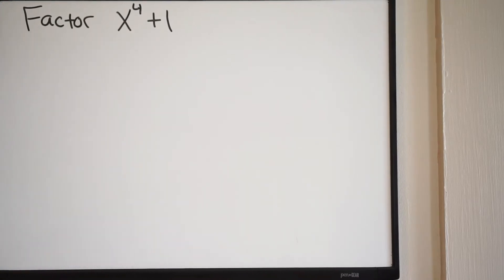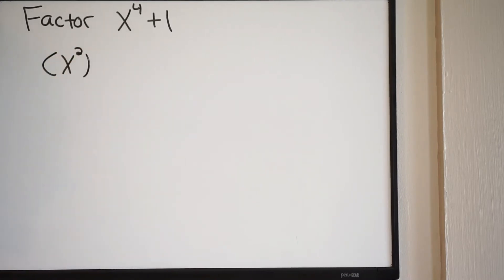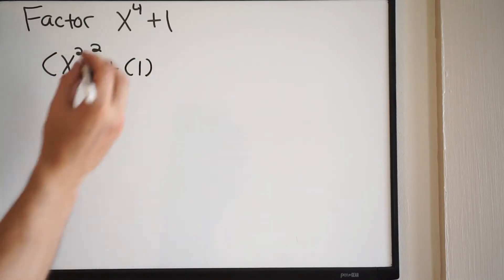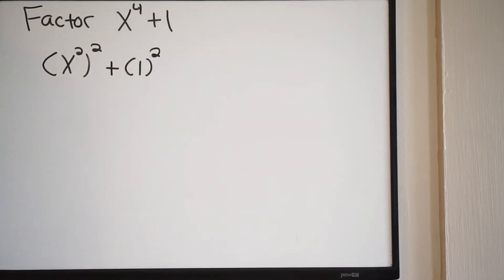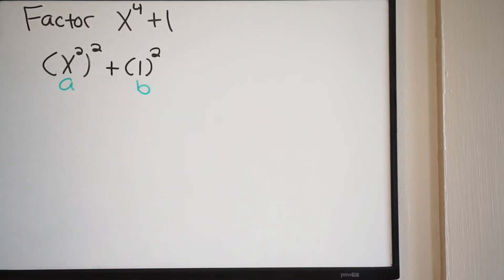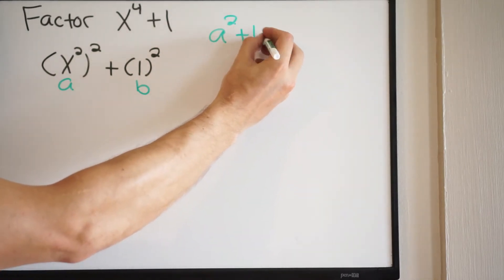The first step is to rewrite what we have. I have x to the fourth plus one, and I'm going to rewrite it as x squared in parentheses to the second power, plus one in parentheses to the second power. Mathematically that's the same thing — we just rewrote it. I'm going to assign my terms some variables: I'll call x squared 'a' and one 'b'. So writing this in terms of those variables, we have a squared plus b squared.